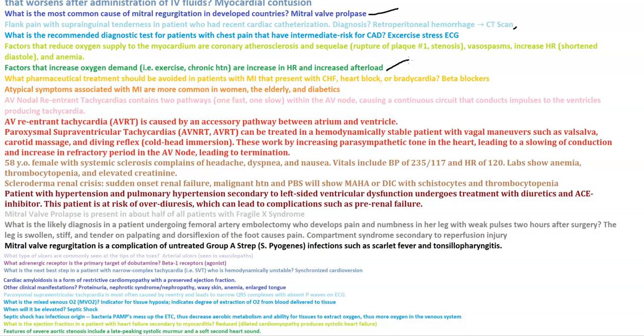The pharmacological treatment that should be avoided in patients with MI presenting with CHF, heart block, and bradycardia is beta blockers. You don't want to give beta blockers in that case because they will cause hypotension, bradycardia, heart block, or worsen CHF.